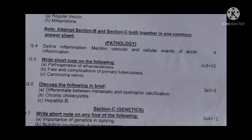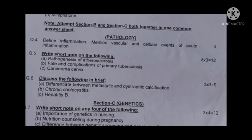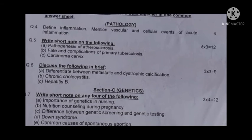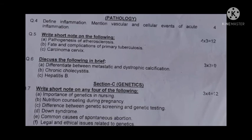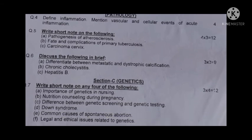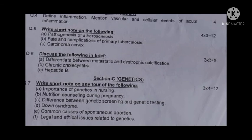Question five: write short notes on the following — (a) pathogenesis of atherosclerosis, (b) fate and complications of primary tuberculosis, (c) carcinoma cervix.